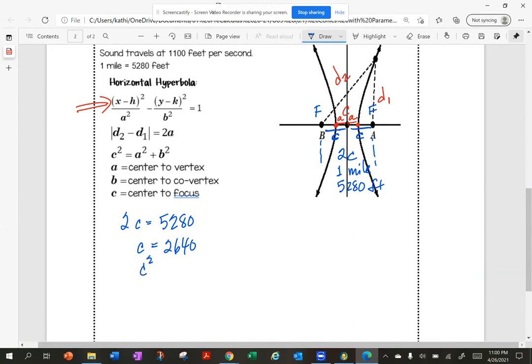If I square it, I get C squared is 2,640 squared.